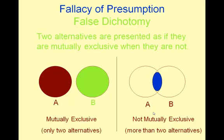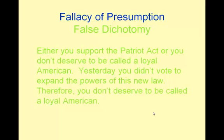Another fallacy of presumption is called a false dichotomy. Here, two alternatives are presented as mutually exclusive when they are not. For example: 'Either you support the Patriot Act, or you don't deserve to be called a loyal American. Yesterday, you didn't vote for the expanded powers of this new law. Therefore, you don't deserve to be called a loyal American.' We know that there are loyal Americans who do not support the Patriot Act, so this is not a true dichotomy.